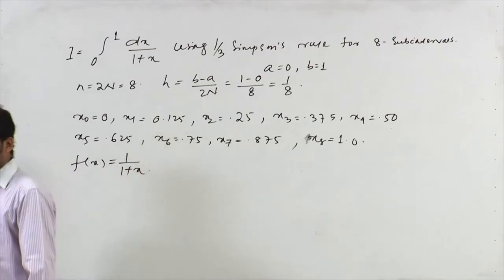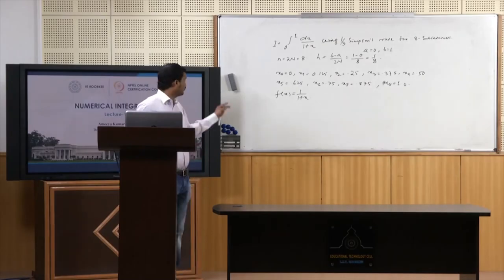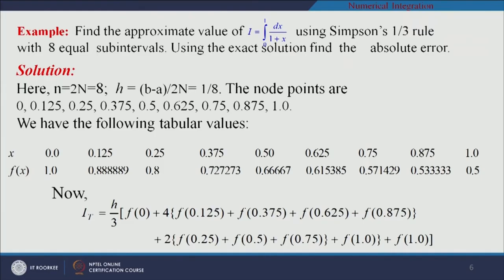Using f(x) = 1/(1+x), the functional values are: f(x0)=1.0, f(x1)=0.888889, f(x2)=0.8, f(x3)=0.727273, f(x4)=0.6667, f(x5)=0.615385, f(x6)=0.571429, f(x7)=0.533333, f(x8)=0.5.